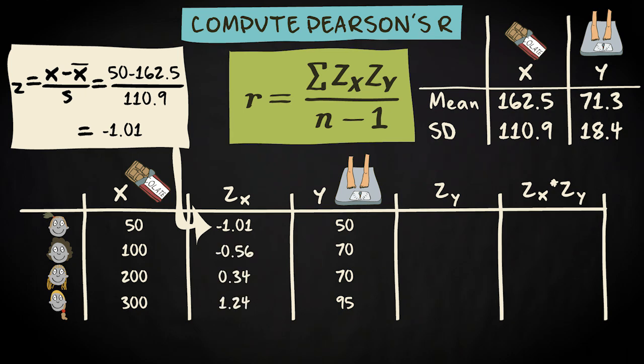We do that for every value of the independent variable, chocolate consumption, and for every value of the dependent variable, body weight.